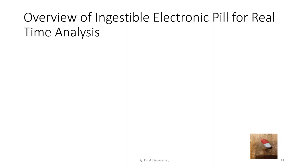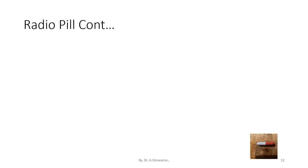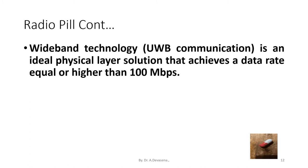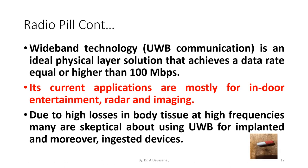Here is the overview of the ingestible electronic pill for real-time analysis. The radio pill is kept inside the stomach and the stomach portions of the patient are viewed through the radio pill. Ultra-wideband (UWB) communication is an ideal physical solution that achieves a data rate equal to or higher than 100 Mbps. Its current applications are mostly for indoor entertainment, radar, and imaging. However, due to high losses in body tissue at high frequencies, many are skeptical about using UWB for implanted and ingested devices.